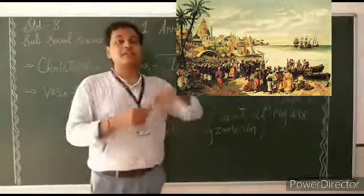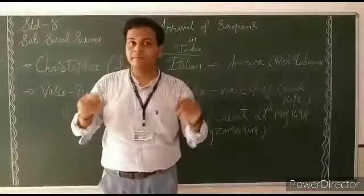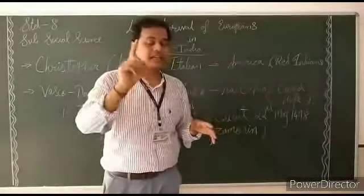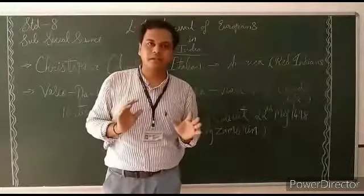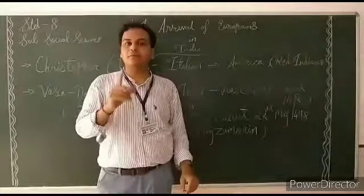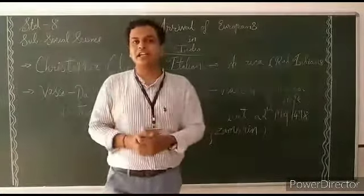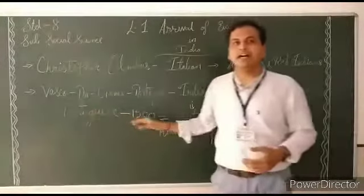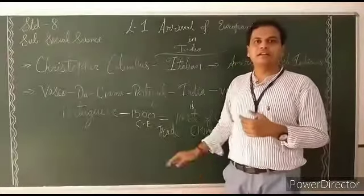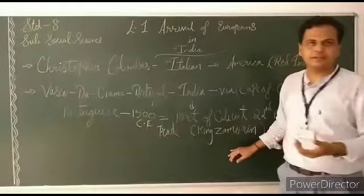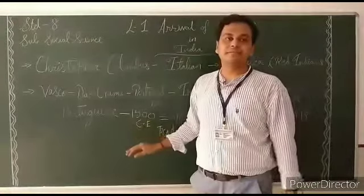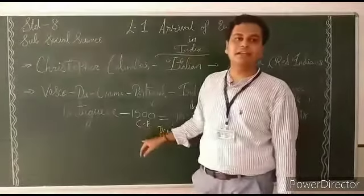When he reached there, as we were having in earlier class, the states have been divided. There were many states - what is states? Kingdoms. And Calicut had a king - King Zamorin. Zamorin was the king of Calicut. So Vasco da Gama went there and he asked King Zamorin, can Portuguese trade in India? King Zamorin said okay, you can come and you can trade over here.